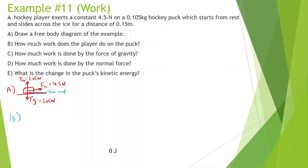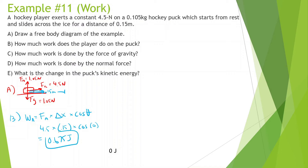Part B: how much work does the player do on the puck? Work applied equals force applied times displacement times cosine theta. Force applied is 4.5, displacement is 0.15 meters, and since it's moving to the right and he's pushing it to the right, the angle is 0, so cosine of 0 is just 1. Work equals 4.5 times 0.15, which gives us 0.675 Joules — that's how much work the player does on the puck.